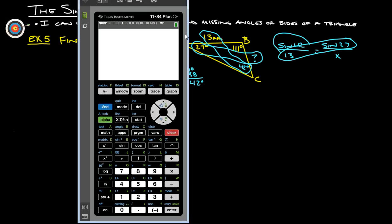So, if we bust out our calculator, 13 sine 27, so the 13 times sine 27 gives us 5.90, divide by sine of 42, divide by sine of 42 degrees, will give us what that last side is, 8.8.